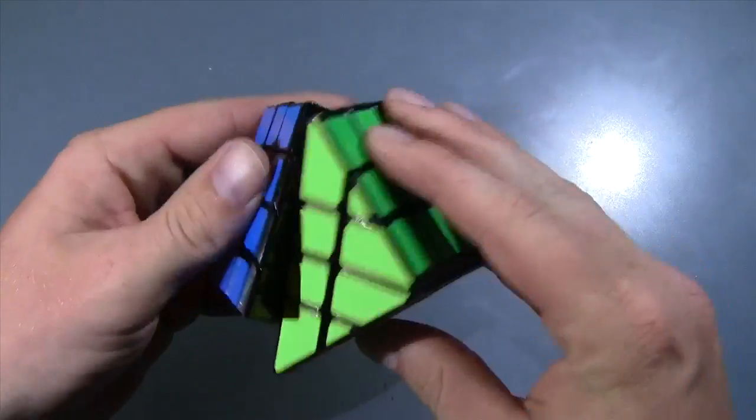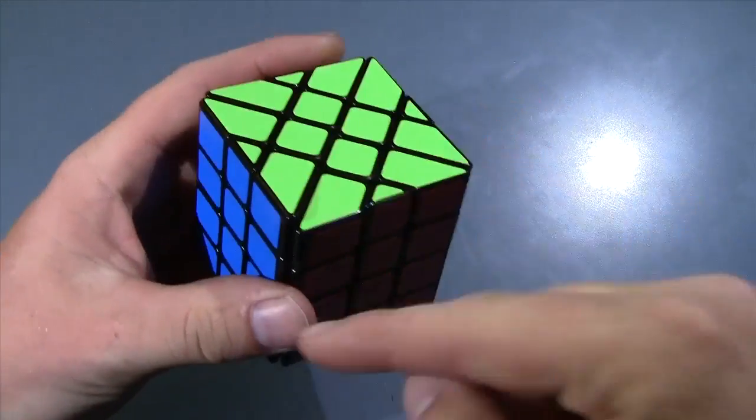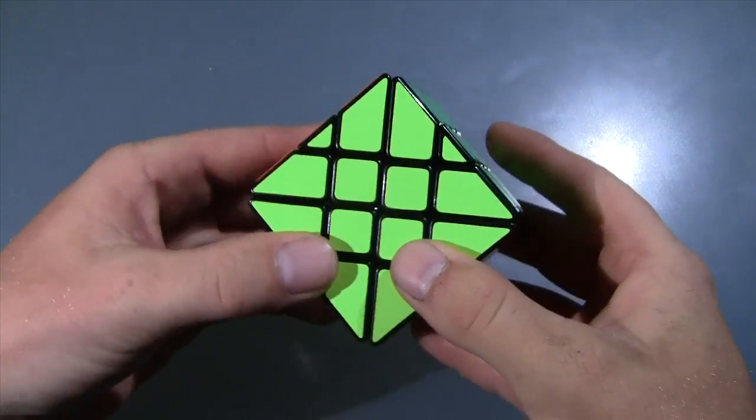So if you're not familiar with a Fisher Cube, you can see that it obviously doesn't turn like a regular 4x4. It turns through the corners, which are not actually corners.